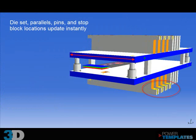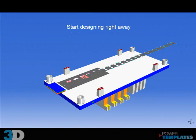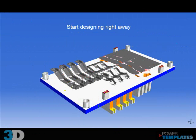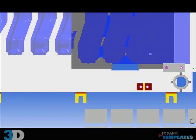Change one dimension and all the affected blocks update at once. Start your design by swapping out a strip and simply moving blocks into place.